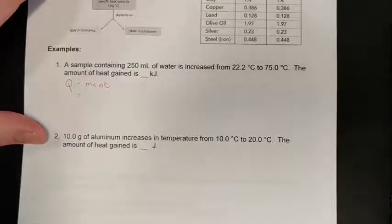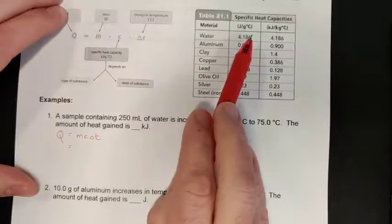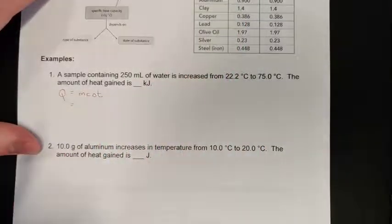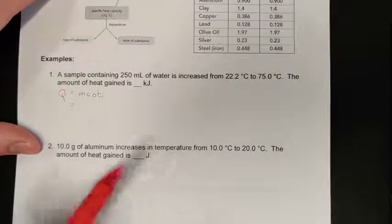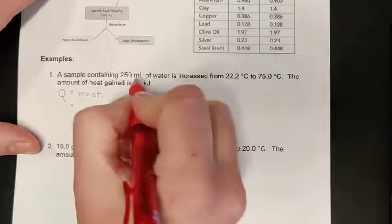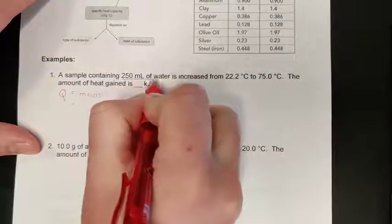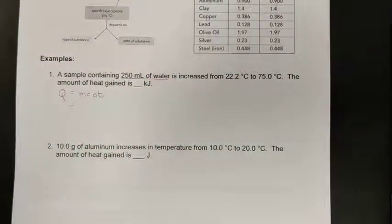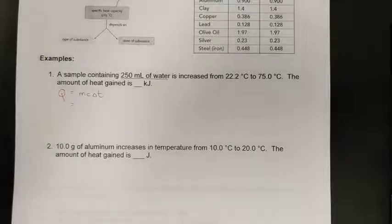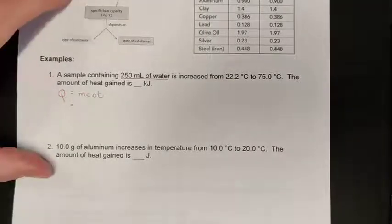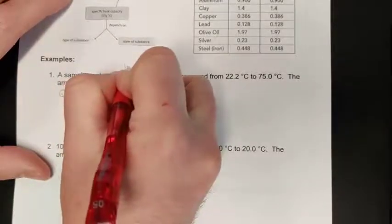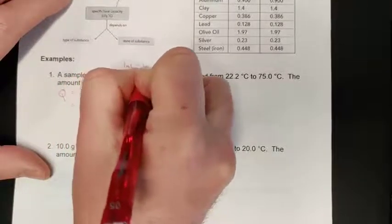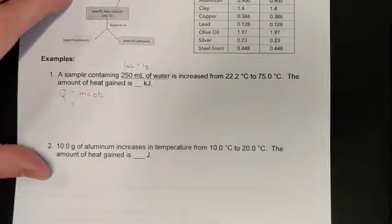Therefore q equals mc delta t is the appropriate formula to use. We just need to know the mass of water and the specific heat capacity of water, which is given to us on a data table, and the amount of heating up or cooling down. One thing you'll want to know here is how to transform or interpret volumes of water to a mass of water.